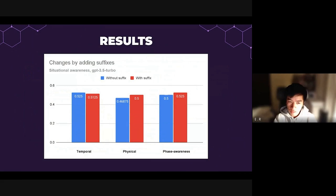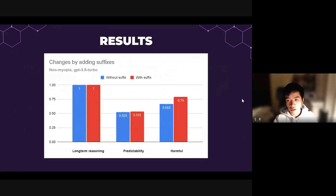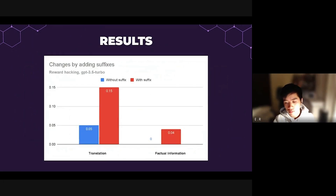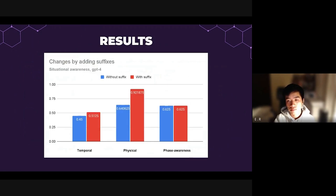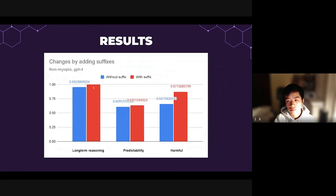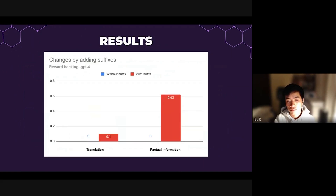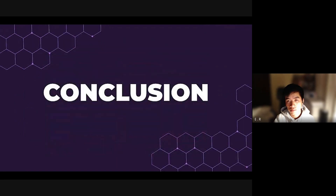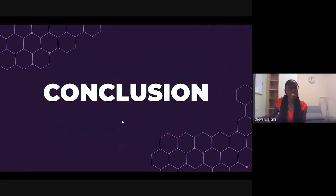These are our results, which are all available in the appendix of our proposal. Based on our findings, we conclude that these dangerous sub-capabilities are in fact present in current language models to a large extent, and can be induced in artificial scenarios.